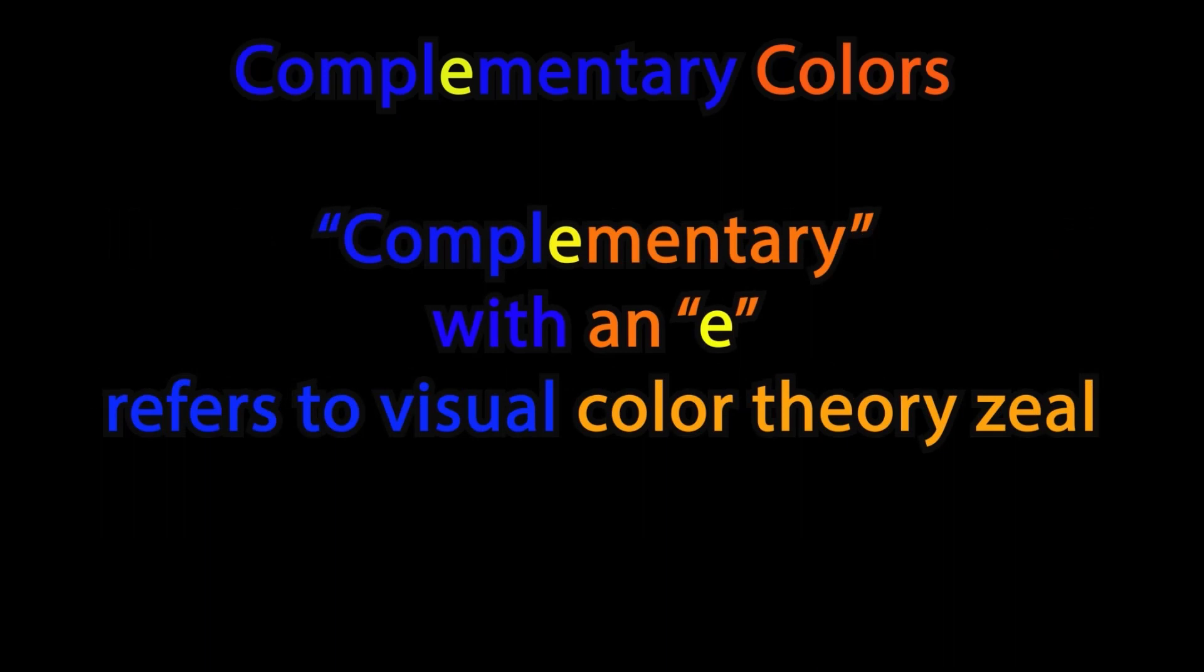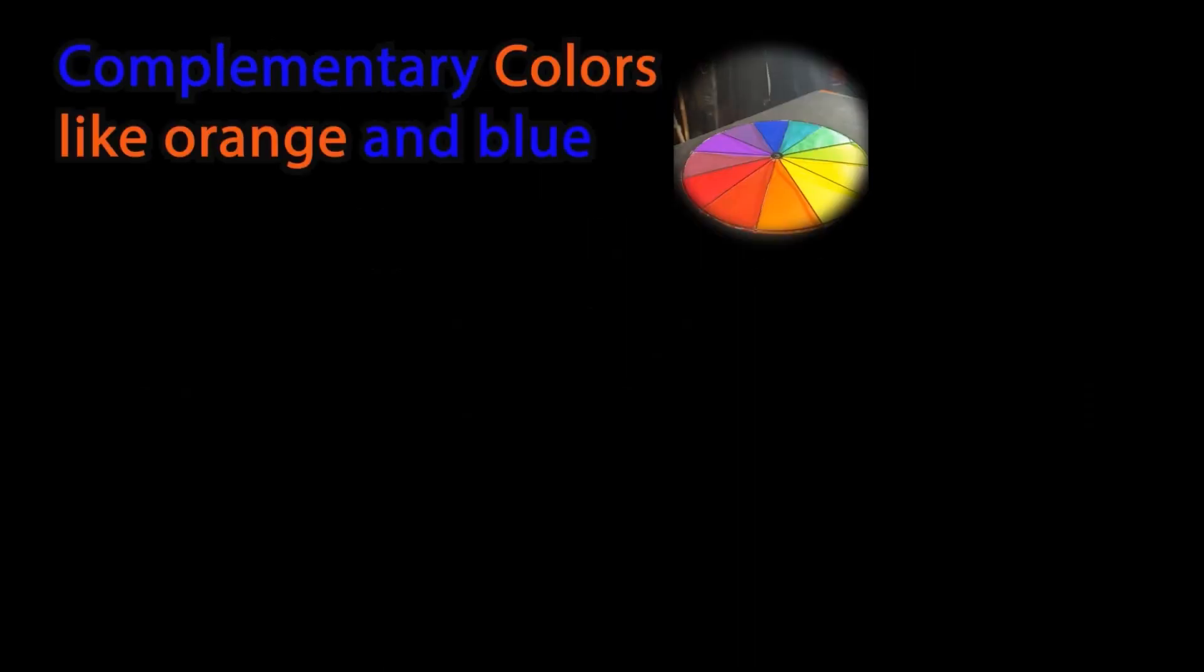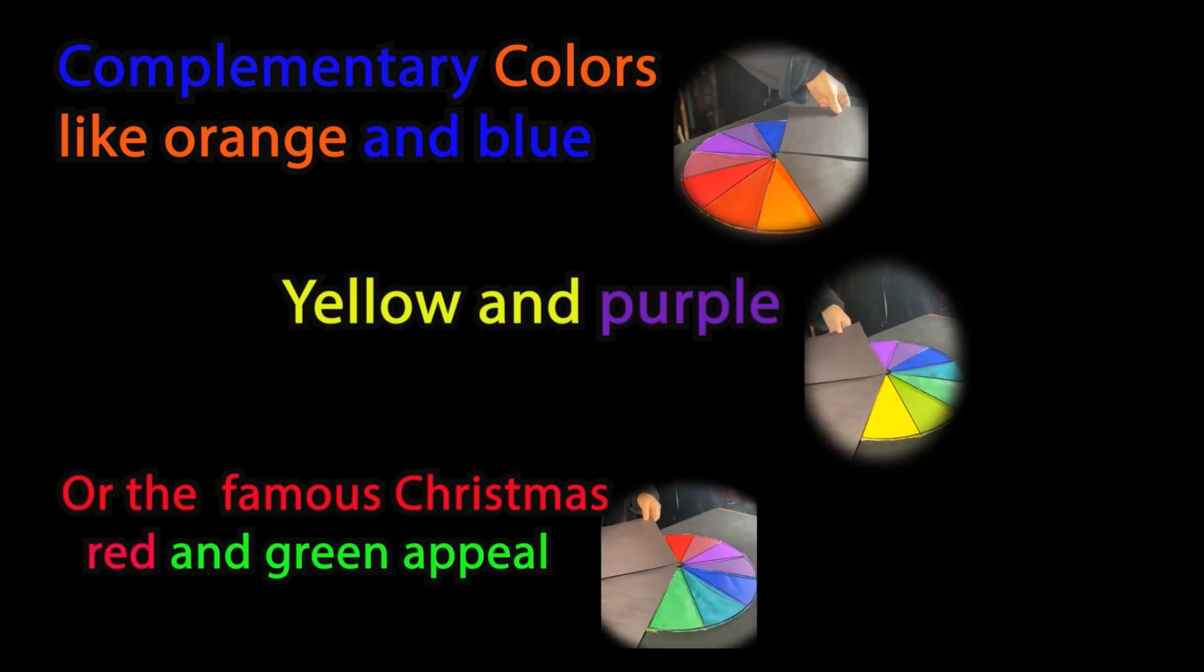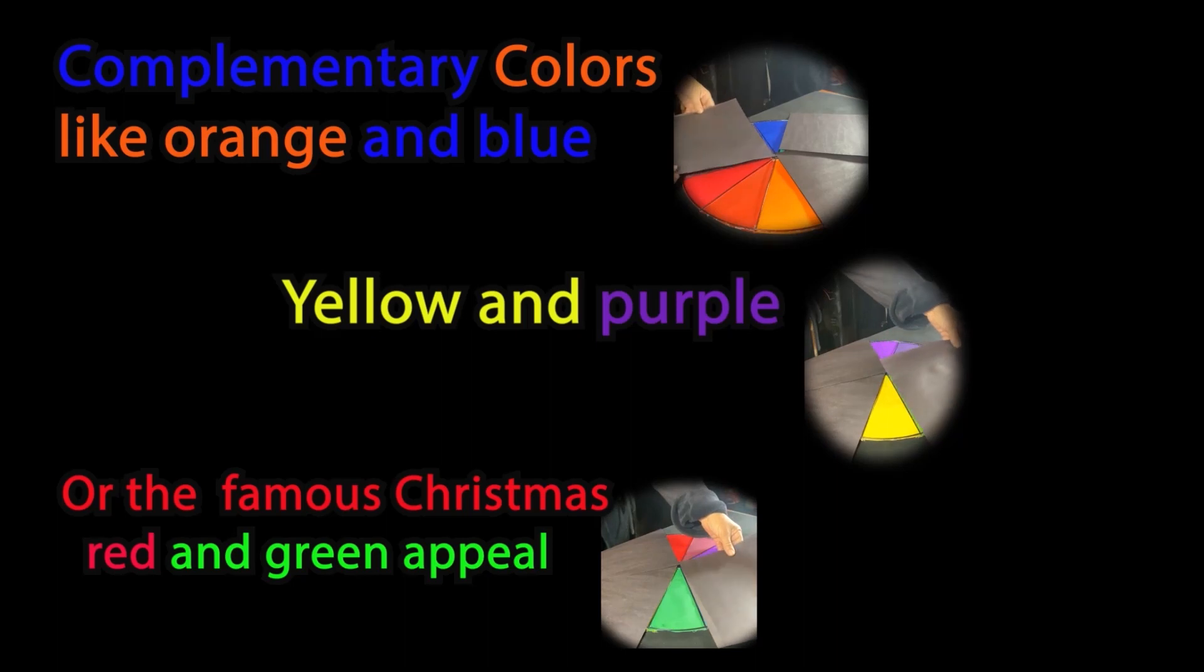Complementary with an E refers to visual colored theory zeal. Like orange and blue, yellow and purple, or the famous Christmas red and green appeal.